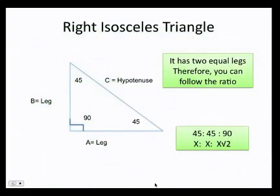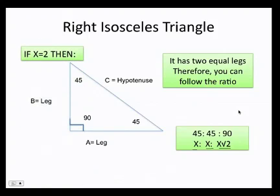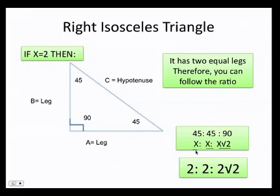There's an easy way to do this: just follow the ratio x : x : x√2. For example, if x equals 2, one side is 2, the other side is 2, and the hypotenuse is 2√2. You simply fill in the value of x into the ratio. Let's go ahead and practice.